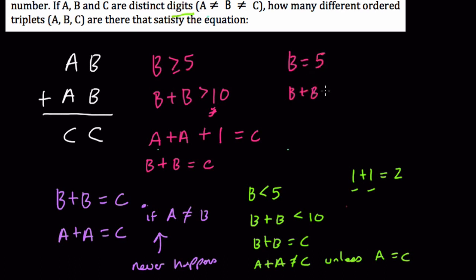B plus B equals 10. So that means in this case C is equal to 0. But A, well, whatever A is, if we add A plus A, the problem here is that we're also adding 1.